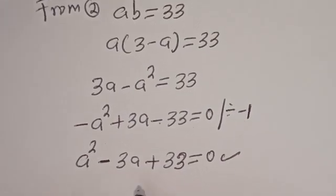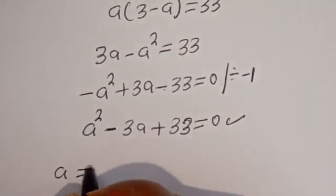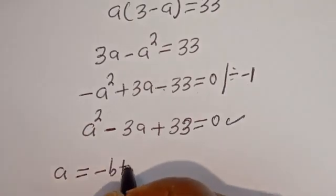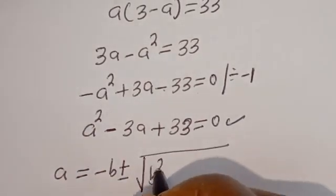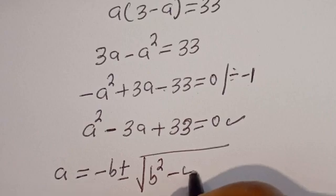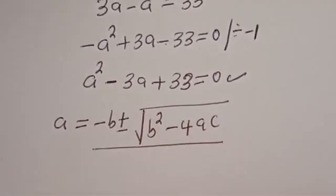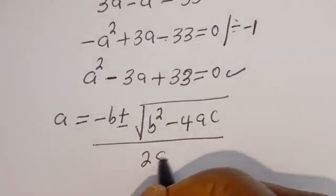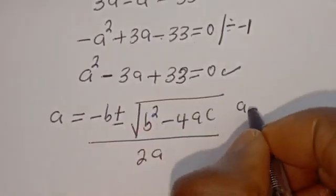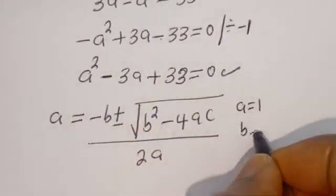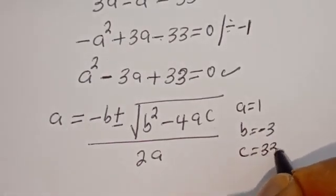We use the quadratic general formula: x is equal to minus b plus or minus square root of b squared minus 4ac, divided by 2a. And from this equation, a equals 1, b equals minus 3, and c equals 33.